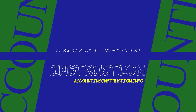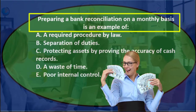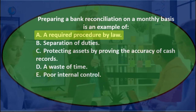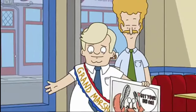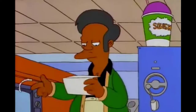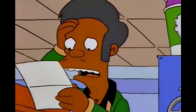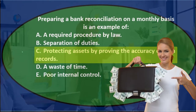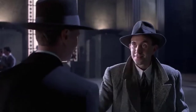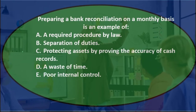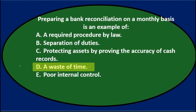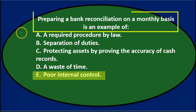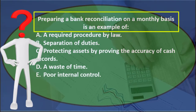First question: Preparing a bank reconciliation on a monthly basis is an example of: A, a required procedure by law. B, separation of duties. C, protecting assets by proving the accuracy of cash records. D, a waste of time. Or E, poor internal controls. We'll go through these one more time and see if we can eliminate some of the options with the process of elimination.